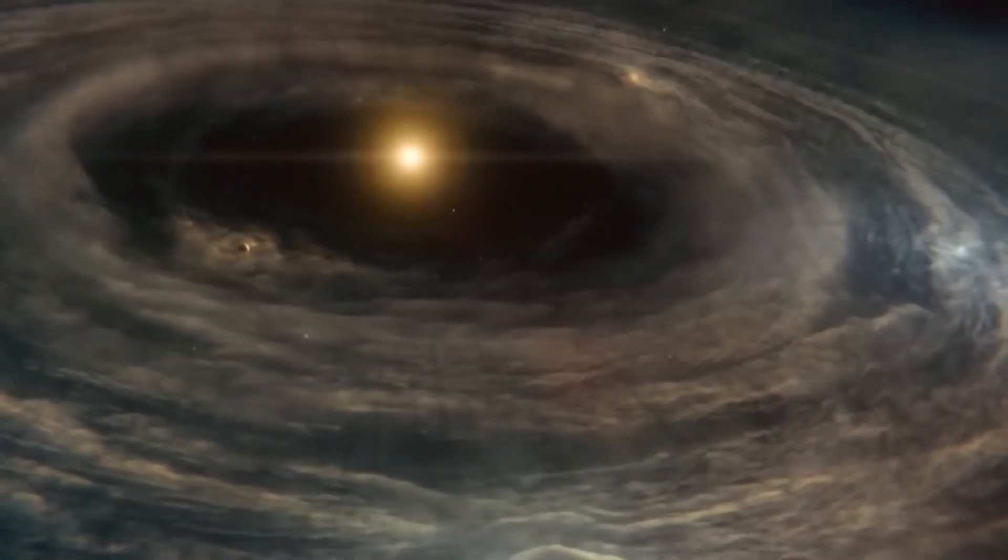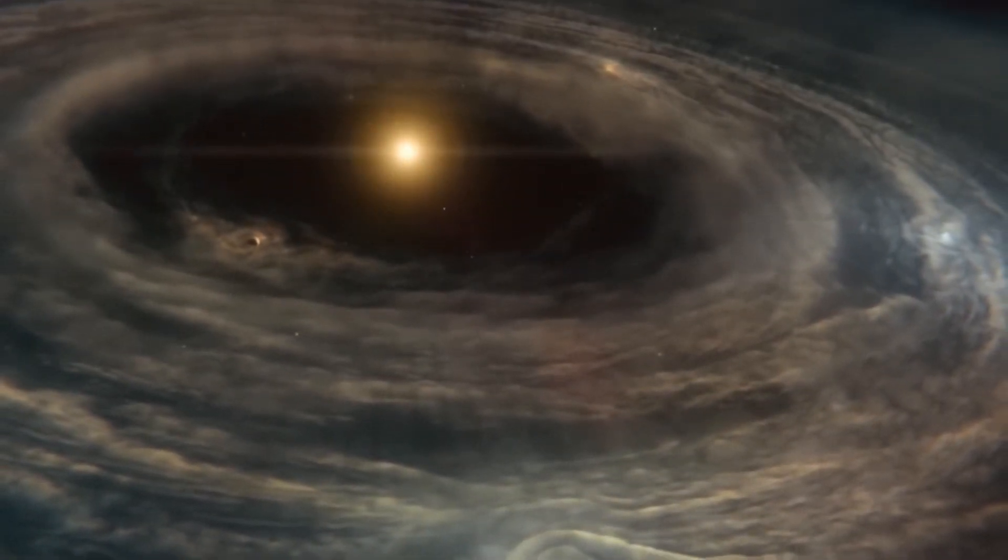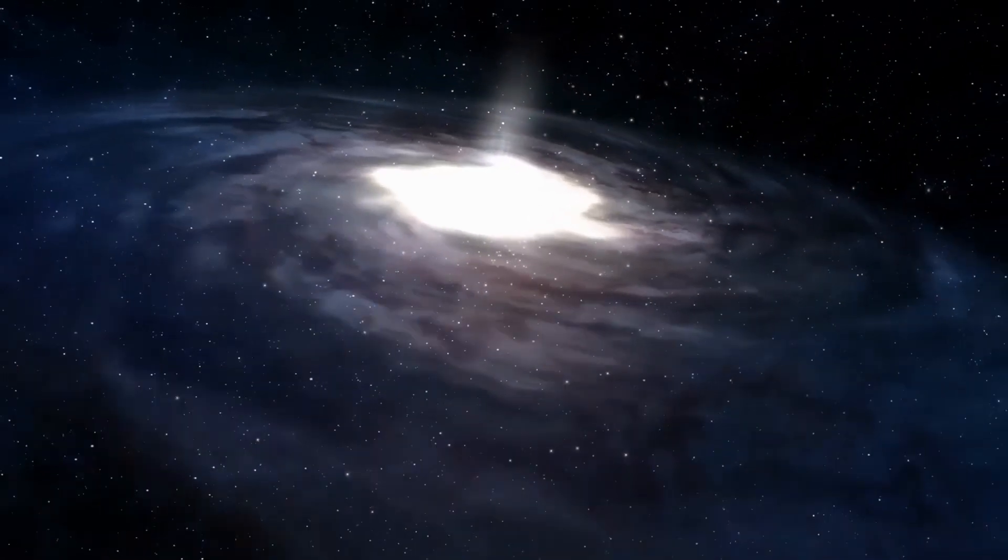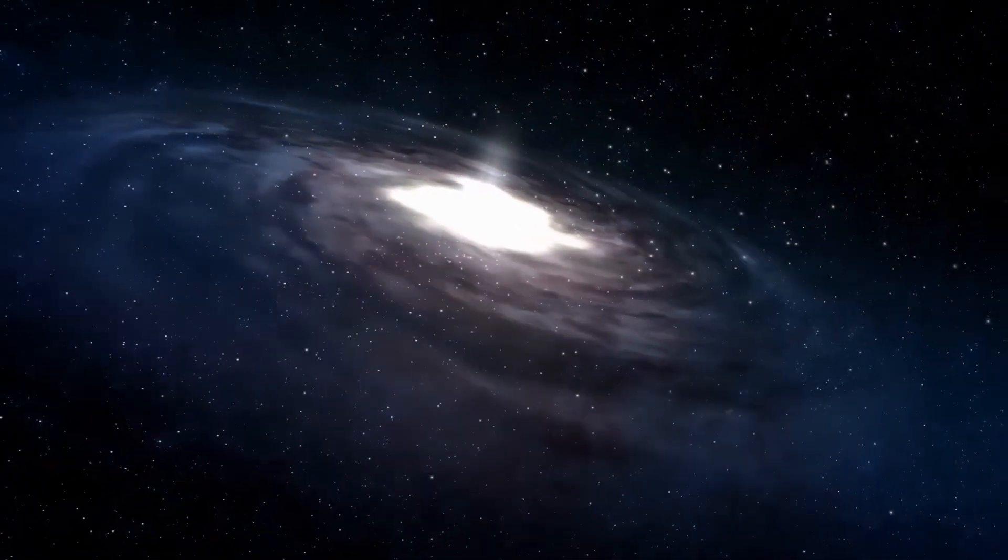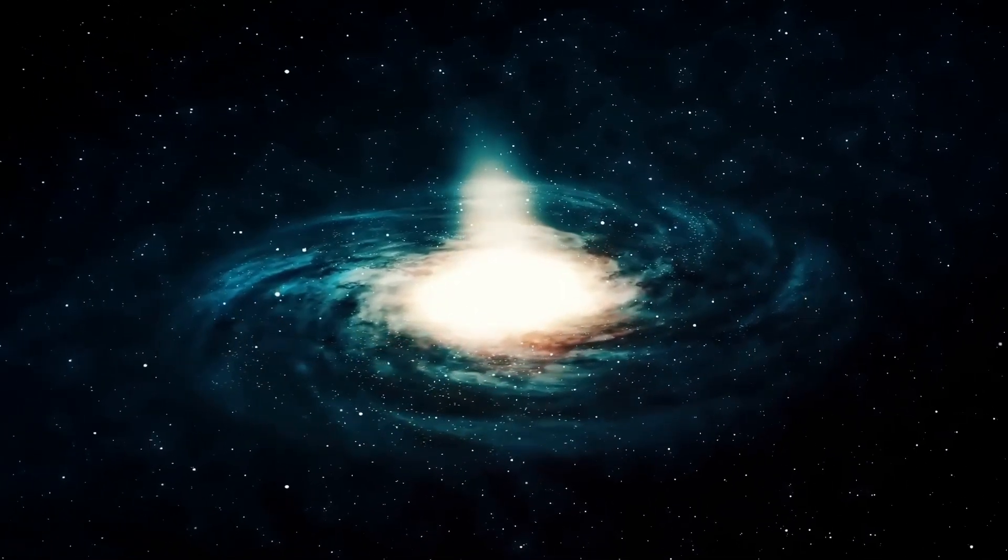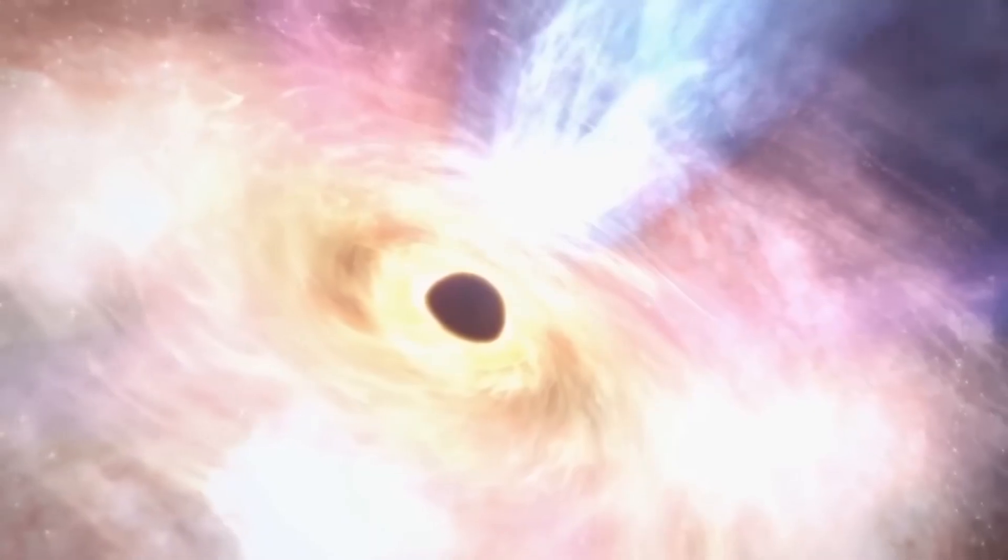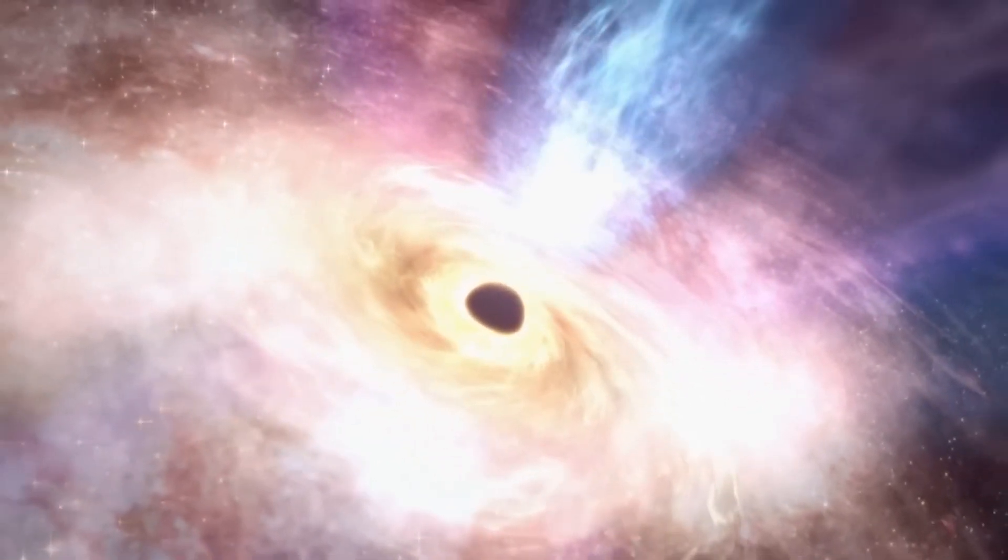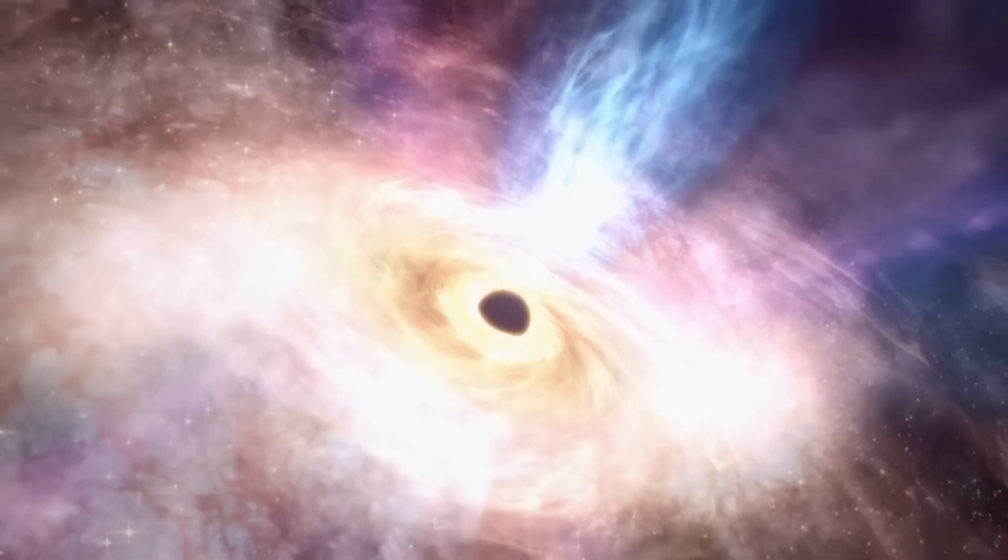The younger inner disk, of which our Sun is a part, and the older thicker disk that extends further out. They discovered that the thick disk likely started forming around 13 billion years ago, just 800 million years after the Big Bang, while the intergalactic halo formed around 2 billion years later.